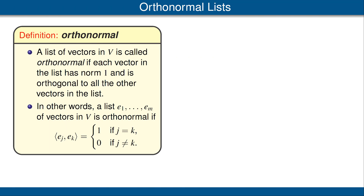Now we are ready to give one of the important definitions in the theory of inner product spaces. A list of vectors in our inner product space V is called orthonormal if each vector in the list has norm 1 and is orthogonal to all the other vectors in the list. In the word orthonormal, the 'normal' part means each vector has norm 1, and the 'ortho' part means the vectors are orthogonal to the other vectors in the list.